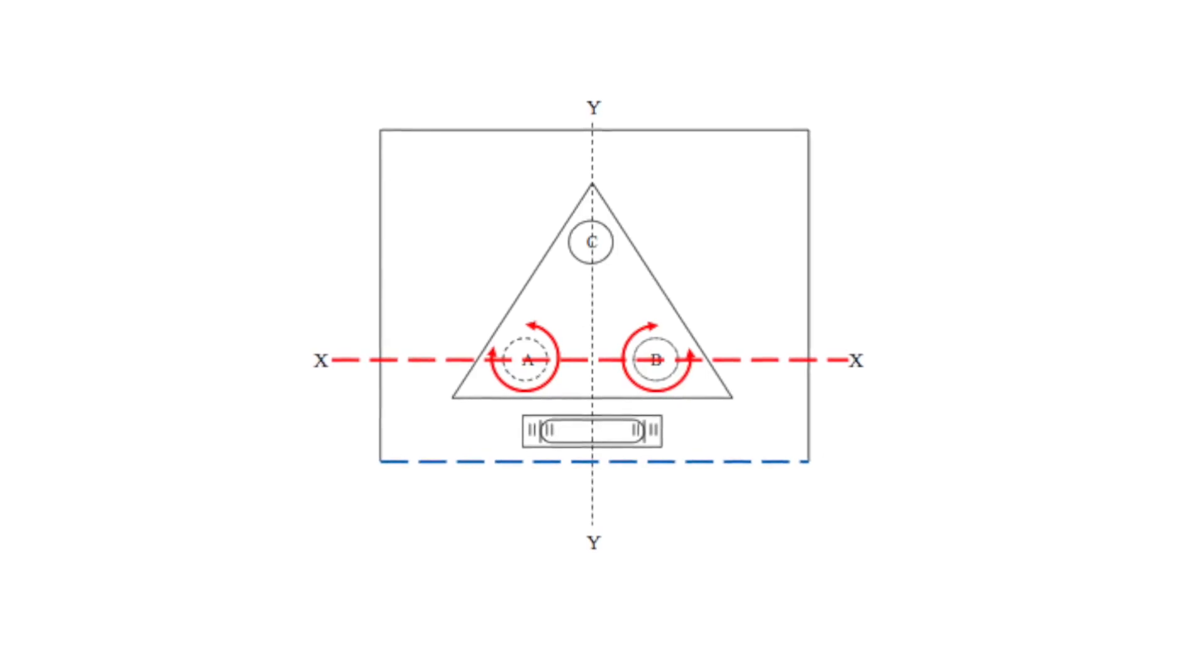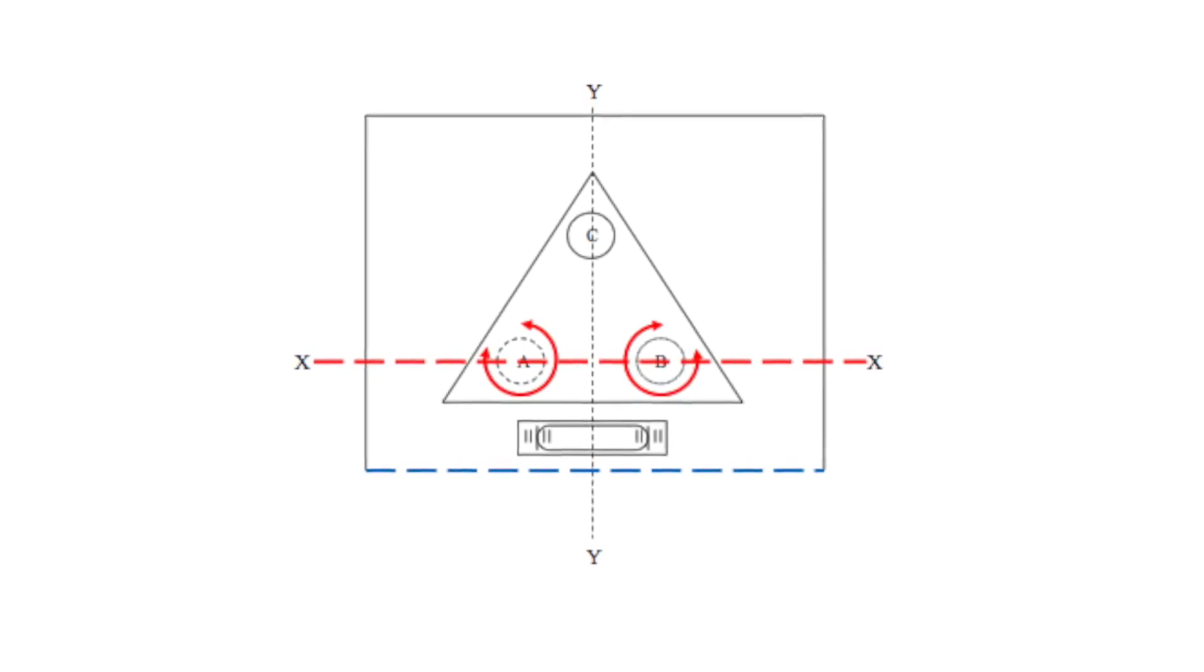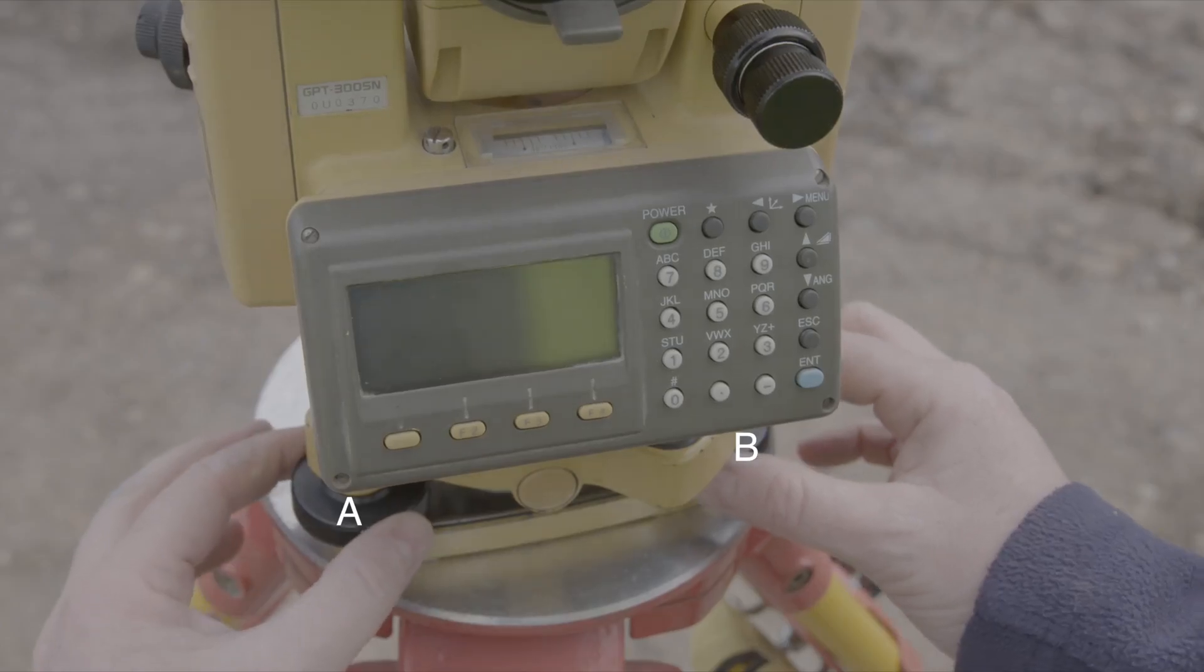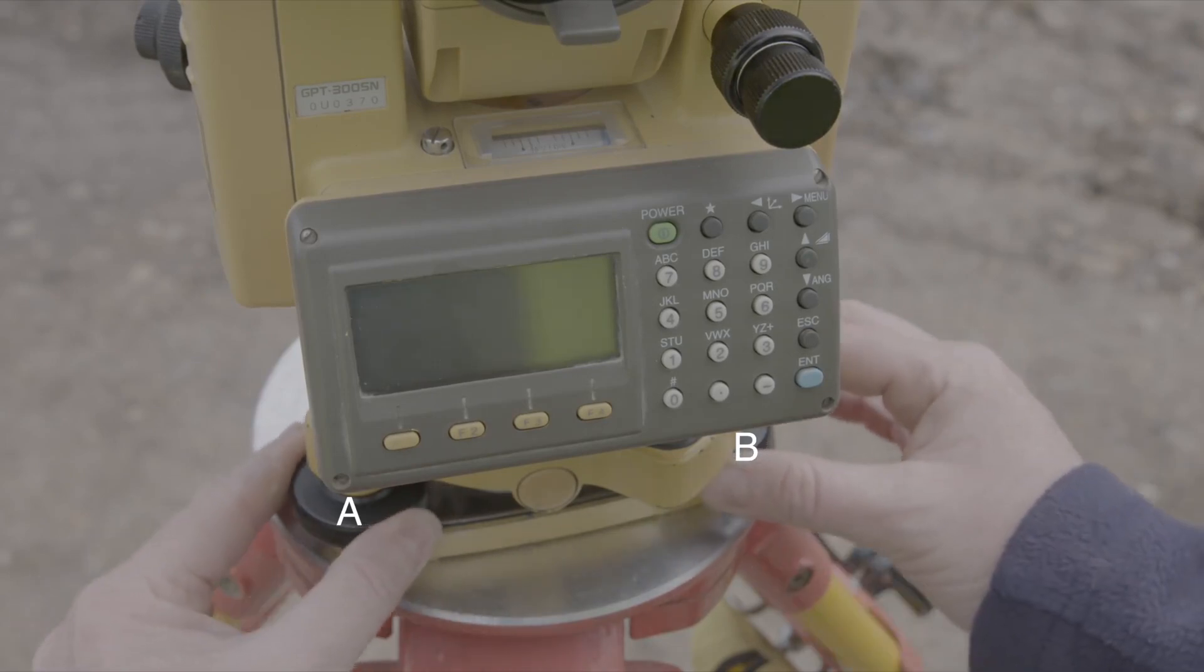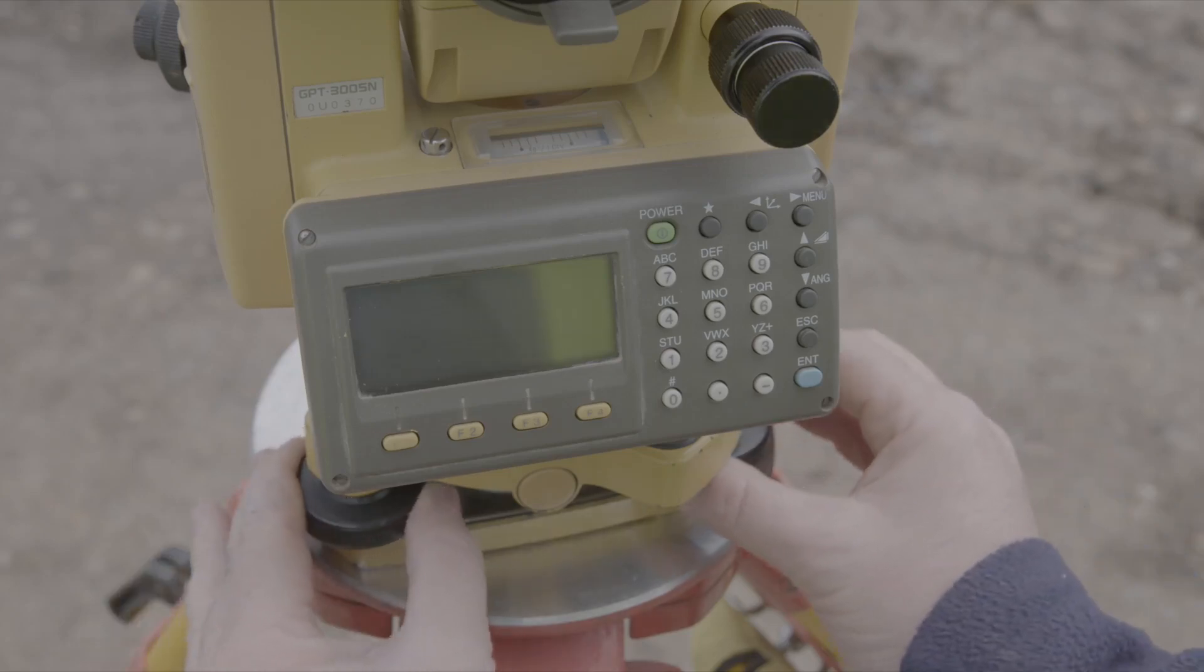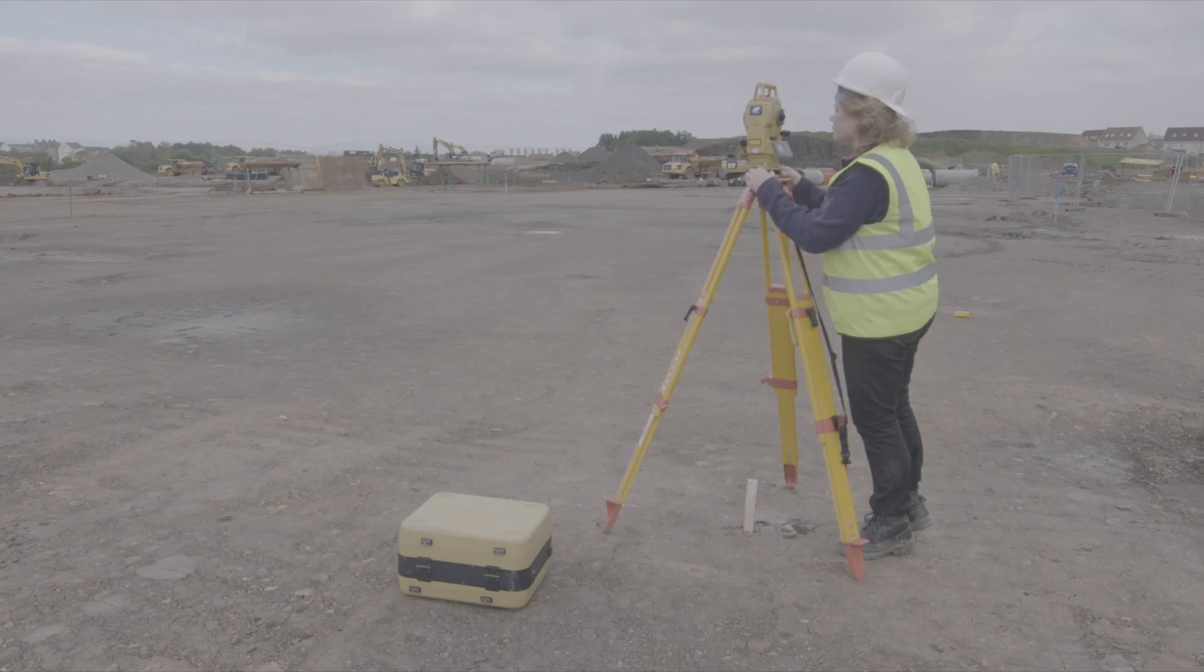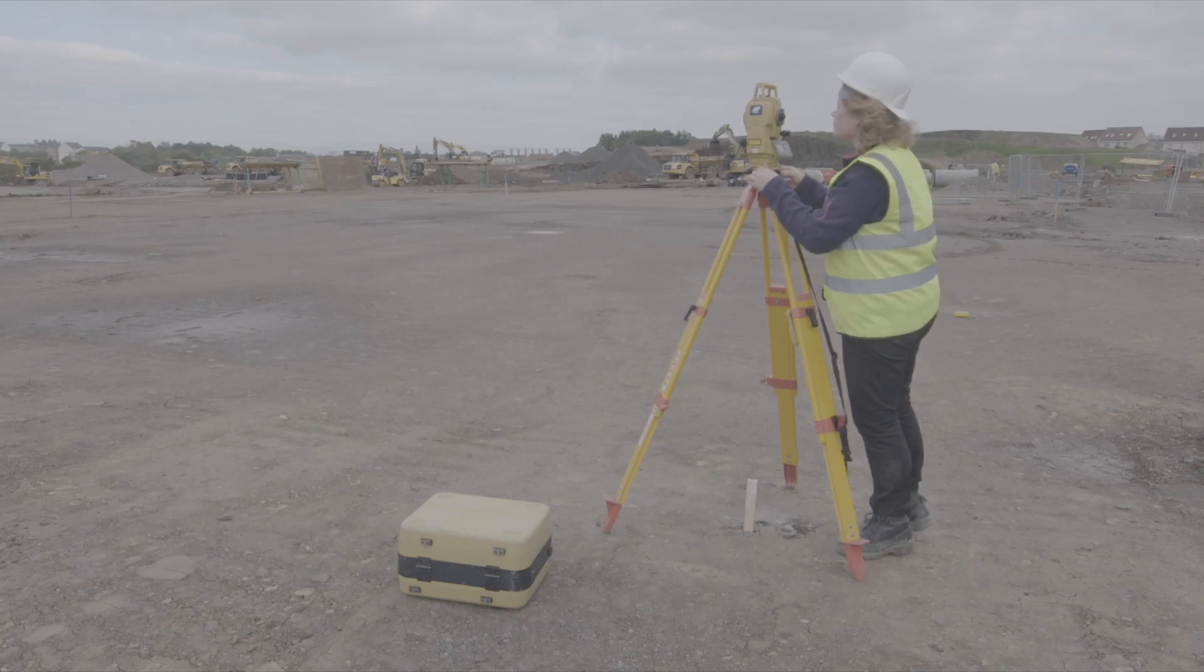So position one is parallel to two of the foot screws. You're going to call these two foot screws at the starting position A and B. You can choose any two foot screws as your starting position and you'll call them A and B. So to isolate the direction of movement you're going to turn the foot screws in opposite directions at exactly the same rate as each other. So turn them inwards together or outwards together at exactly the same speed. You mustn't turn one faster than the other. You mustn't turn them both in the same direction. Otherwise it will be tilting the instrument back and forth in the perpendicular direction and it won't register on the bubble.